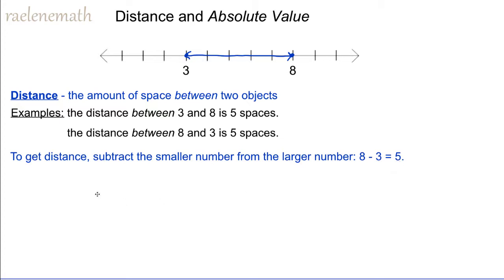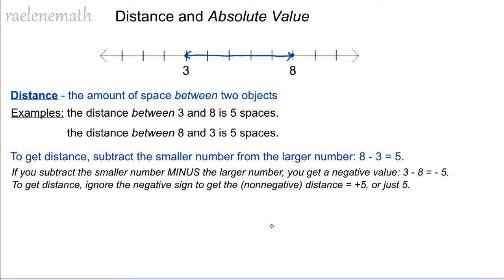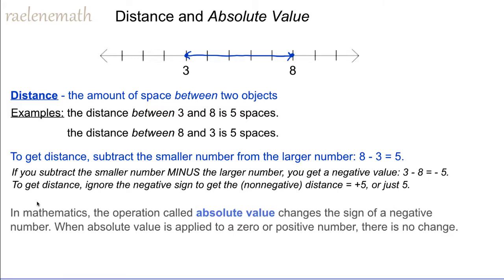Distance can't be negative. However, if we do subtract the smaller number minus the larger number, such as three minus eight, we get a negative value like negative five. We can still use this calculation to get distance — we simply ignore the negative sign and the distance is just five. In mathematics, we call this operation of ignoring the negative sign of a number the absolute value of a number.